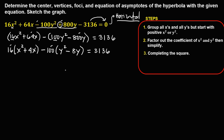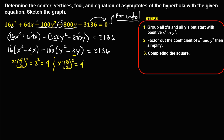Now do completing the square. For x, take the coefficient of x, which is 4, divide by 2 to get 2, then square it: 2 squared equals 4. For y, take the coefficient of y, which is 8, divide by 2 to get 4, then square it: 4 squared equals 16. These are the values we add to complete the square.